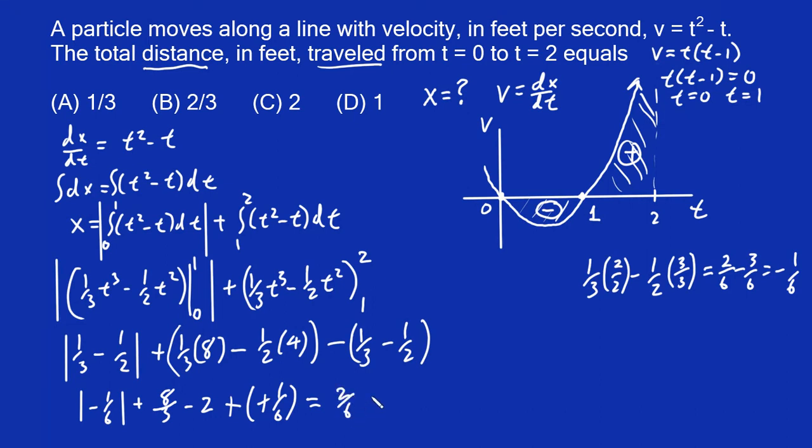And then plus eight thirds. And why don't we just make this into 16 sixths, so they have the lowest common denominator. And then minus two. So then we have two plus 16, which is 18. And 18 divided by six is three. So you just get three minus two. That's equal to one.